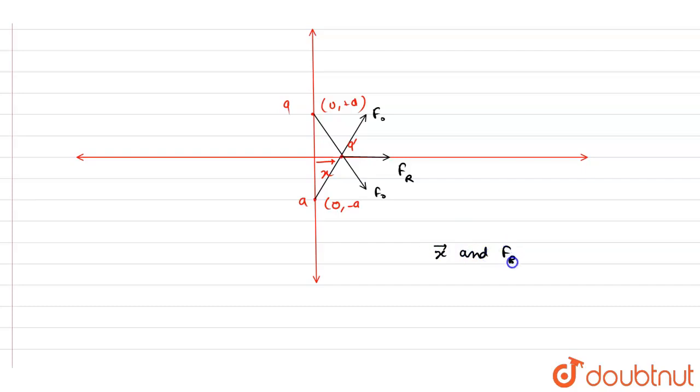And the F resultant are parallel, so they will be unstable.